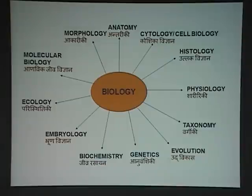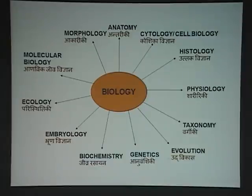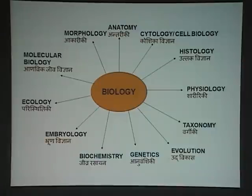There are three main features of chordates. Presence of notochord, presence of dorsal tubular nerve cord, and pharyngeal gill slits. In embryological stage, there are certain gill slit-like structures in the neck region. During development, they disappear, but they are present.